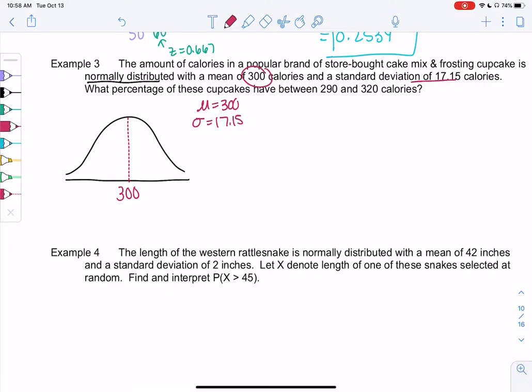What percentage of these cupcakes are between 290 and 320 calories? So we draw the normal curve, we'll shade the area. So 290 is somewhere under 300, 320 is somewhere above 300. We'll just approximate to get a visual and we'll shade the area in between.